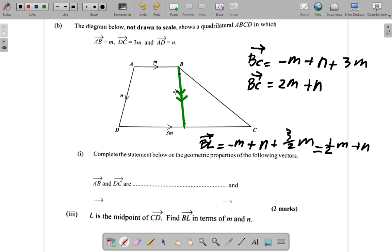Suppose in adding the vectors and getting BL, we go this way. BL equals BC going from B to C, that would be 2M plus N, plus from C to L. It's negative because we're going in the opposite direction. Negative 3M goes this way to the right, but we're adding to the left.